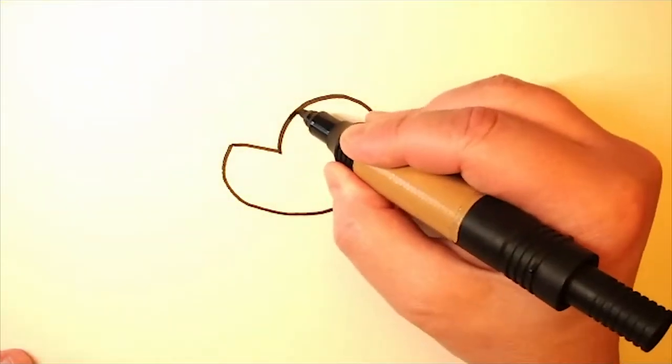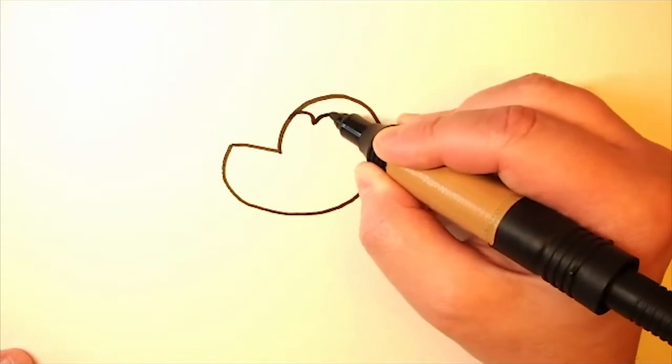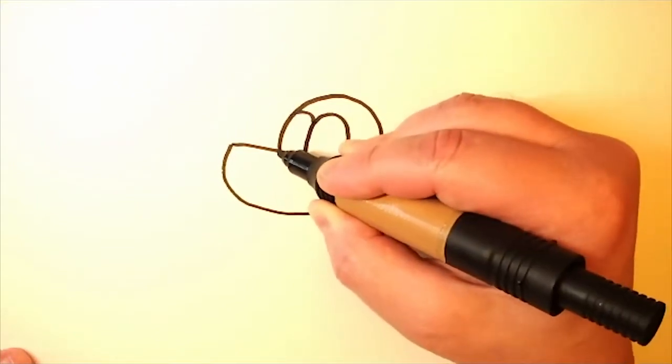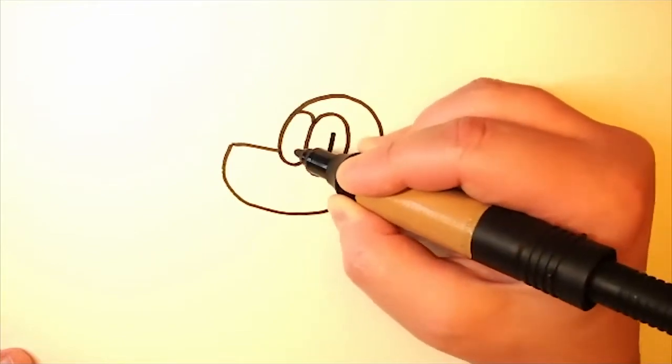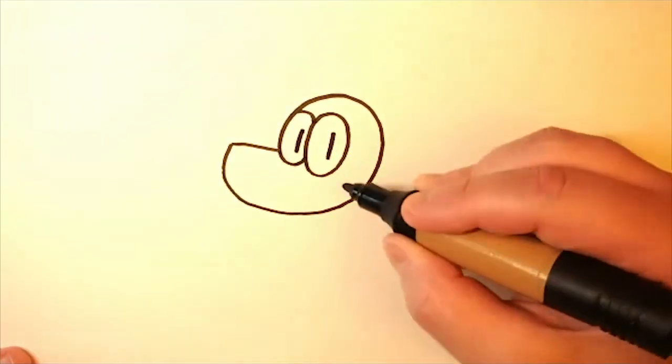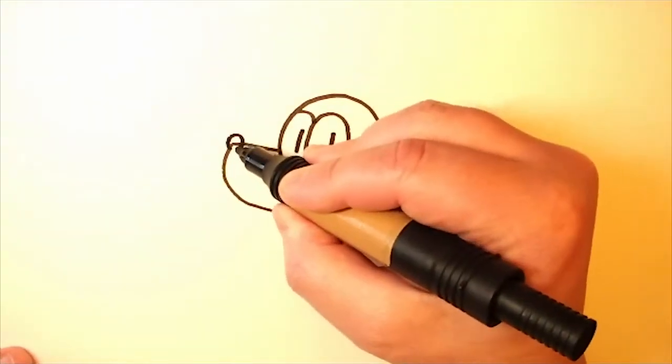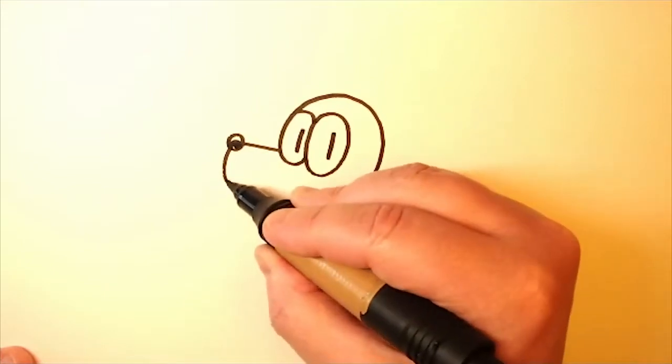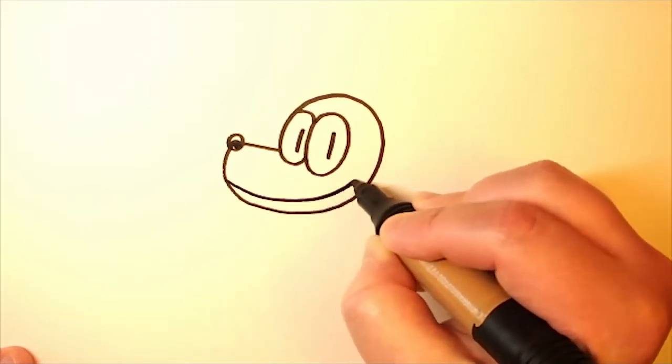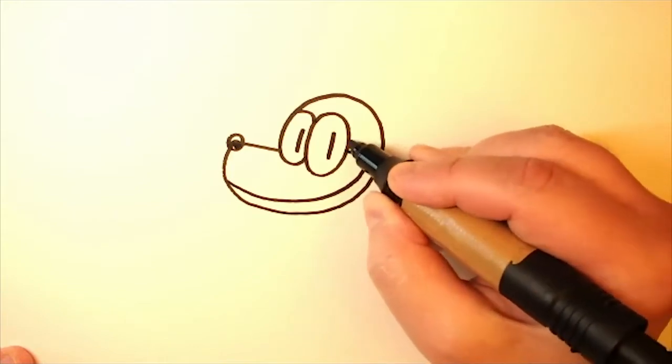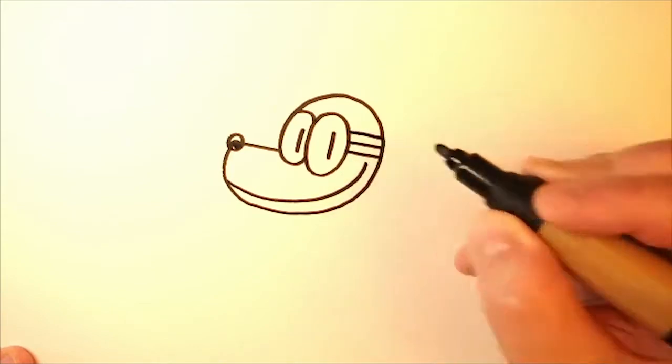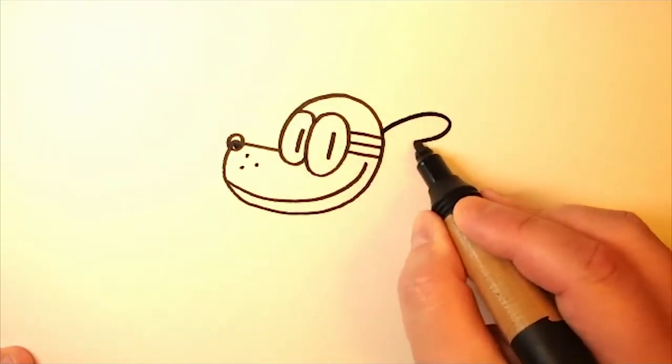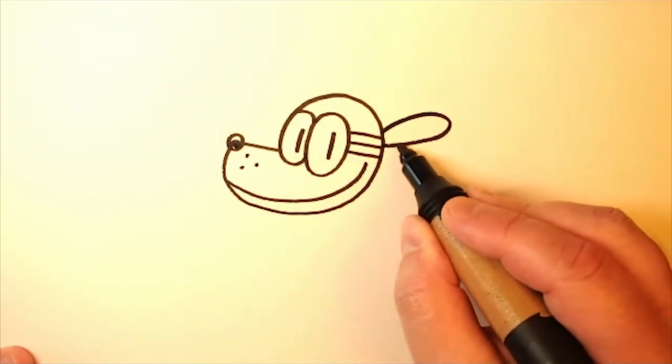You start out with the basic same shape as Dogman's head, and then we add two big eye holes right here for a little helmet type thing that he wears. Stick his nose there. I always add a little bit of white to the top of his nose so it looks like it's shiny. And then a smile, and then put the helmet on, a little strap, and three dots there, and then two ears coming out the back.